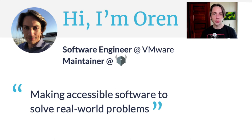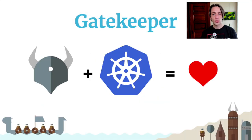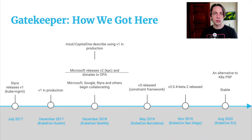So what is Gatekeeper? Gatekeeper is an extensible admission controller for defining and enforcing policies over Kubernetes. It leverages OPA under the hood for making policy decisions while providing a Kubernetes-native layer on which operators can define their policies once and reuse them across multiple contexts. Back in 2017, Styra released Kube Management, a sidecar for loading OPA policies from config maps. In 2018, Microsoft released Kubernetes Policy Controller and donated it to OPA. Later that year, Microsoft, Google, Styra, and others began collaborating to reimagine policy management, the fruits of which became the Gatekeeper project.